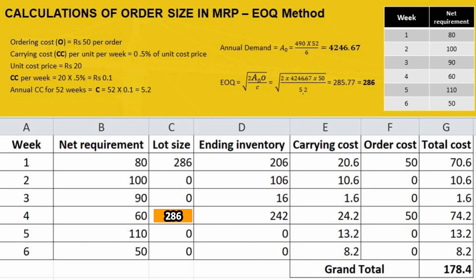We have already established the carrying cost per unit per week as 0.1. The unit cost price is 20 and the carrying cost is 0.5% of the unit cost price, so 20 × 0.5% = 0.1. Therefore, the annual carrying cost is 52 weeks × 0.1, which gives 5.2 per unit per year.